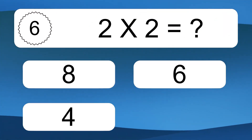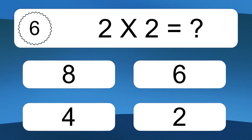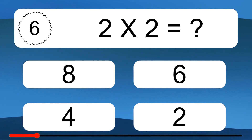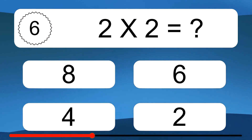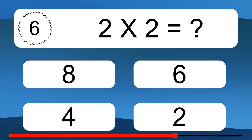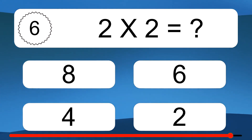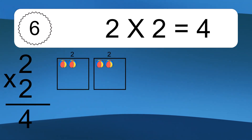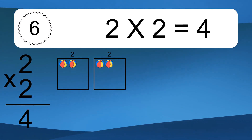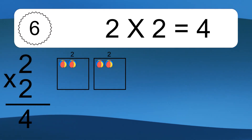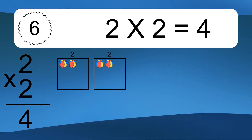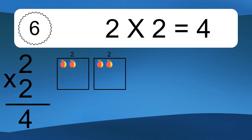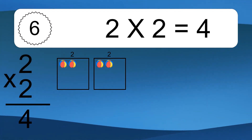2 times 2 equals what? We have 2 boxes, and each box has 2 colorful balls inside. If you count all the balls in all the boxes together, you will have 2 times 2 balls. This equals 4 balls.